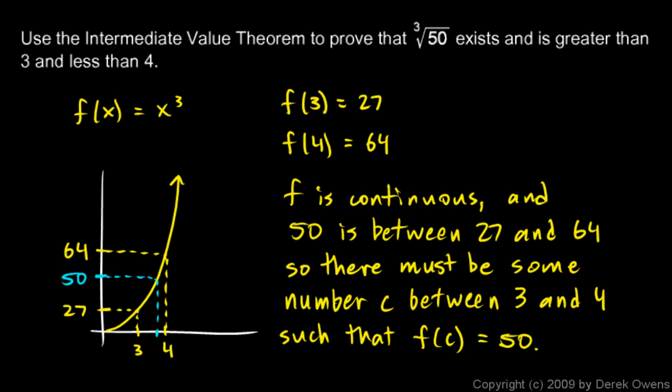You might want to write out, according to the intermediate value theorem, there must be some number c between 3 and 4, such that f of c is equal to 50.